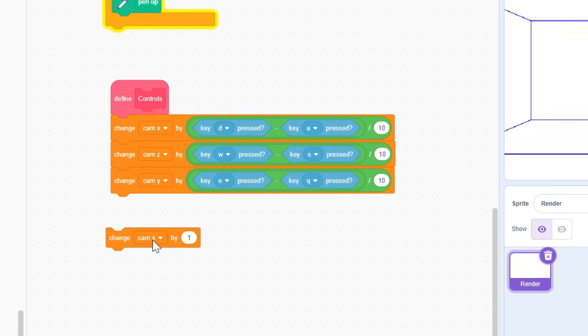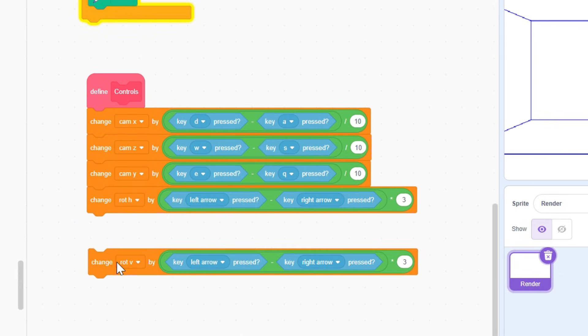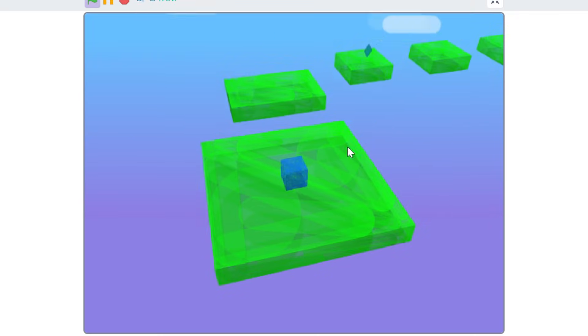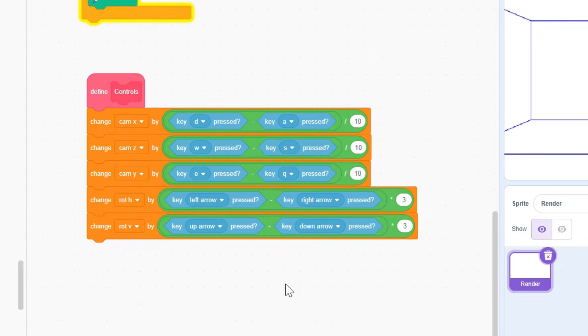Next, in the controls block, change rot h by left arrow minus right arrow times 3, and change rot v by up arrow minus down arrow times 3. Later on in the series, we're also gonna add mouse controls, but for now this is fine.